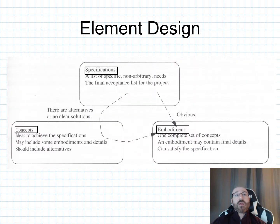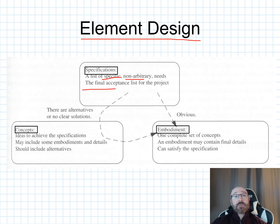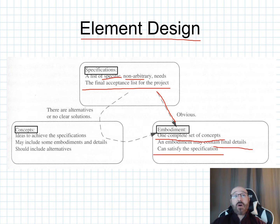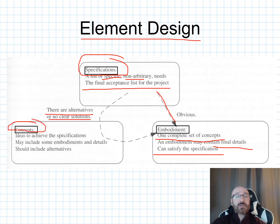In element design, we may have a list of specifications — specific, non-arbitrary needs that form the final acceptance list for the project. If there are obvious solutions, we go straight to embodiment: one complete set of concepts that may contain final details and can satisfy all specifications. If there are alternatives or no clear solutions, we work with different concept ideas that include some embodiments and details, along with alternatives.